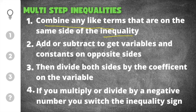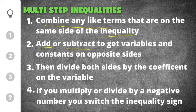After you combine like terms, you will add or subtract to get the variables on one side and constants on the other. You'll add or subtract to move constants and variables around so that you have just constants on one side and just variables on the other.